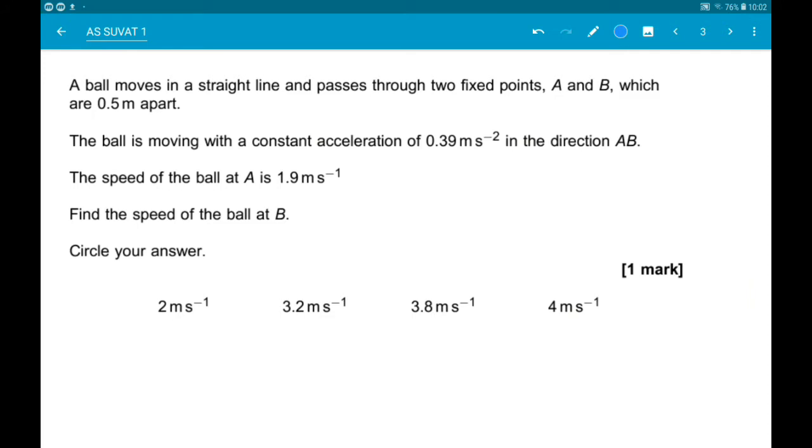Number 2. A ball is moving in a straight line between two fixed points, A and B, which are 0.5 metres apart. The ball is moving with constant acceleration of 0.39 metres per second squared. The speed of the ball at A is 1.9 metres per second. We want to find the speed of the ball at B.